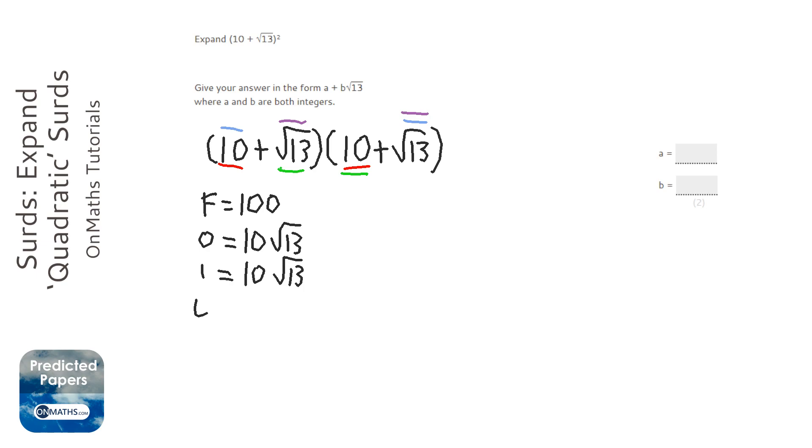if you times two surds together, you times the numbers. So 13 times 13, which is 169. Then when you square root that, you actually get 13. So you actually get 13 there.